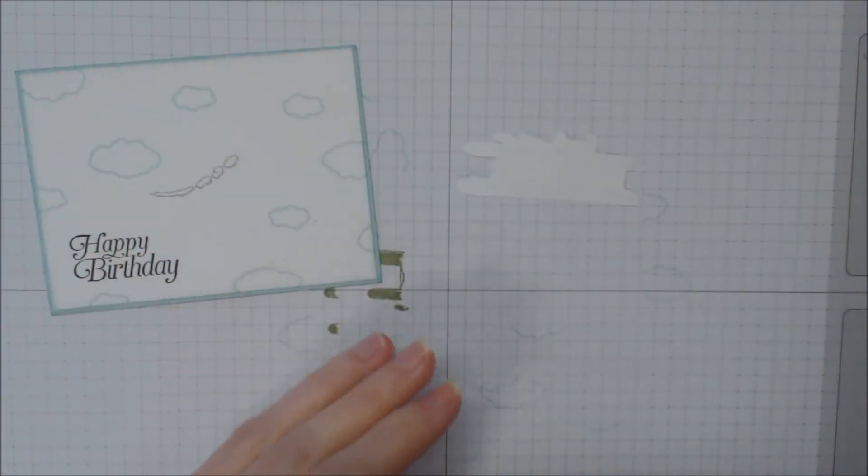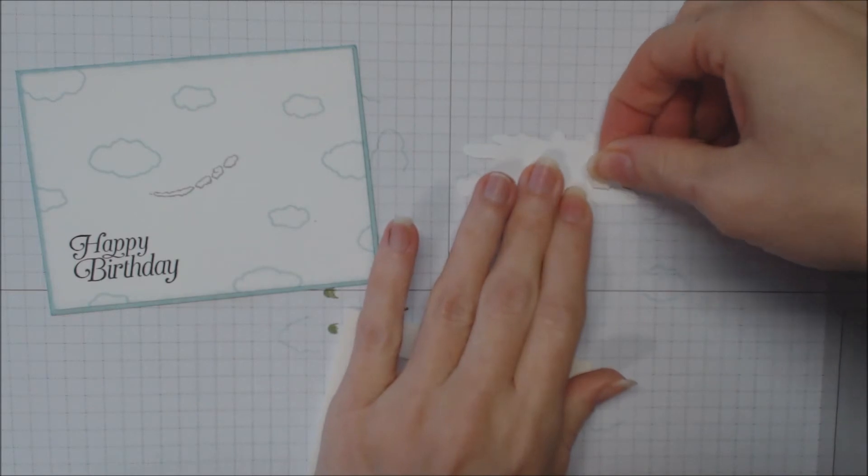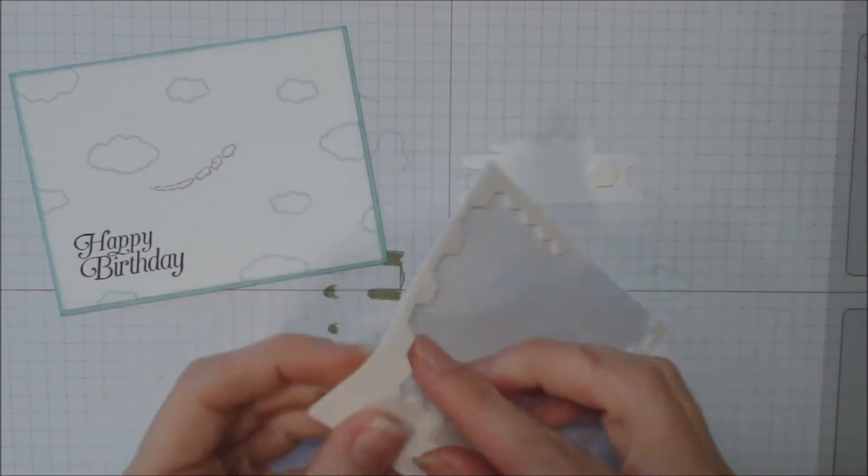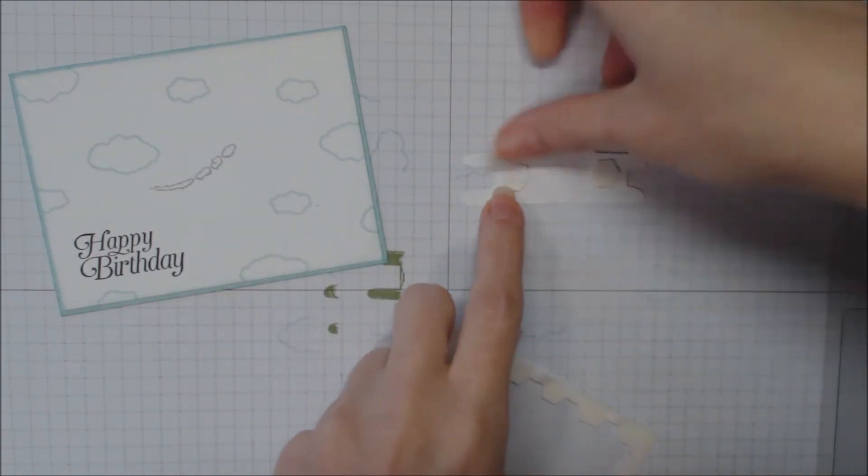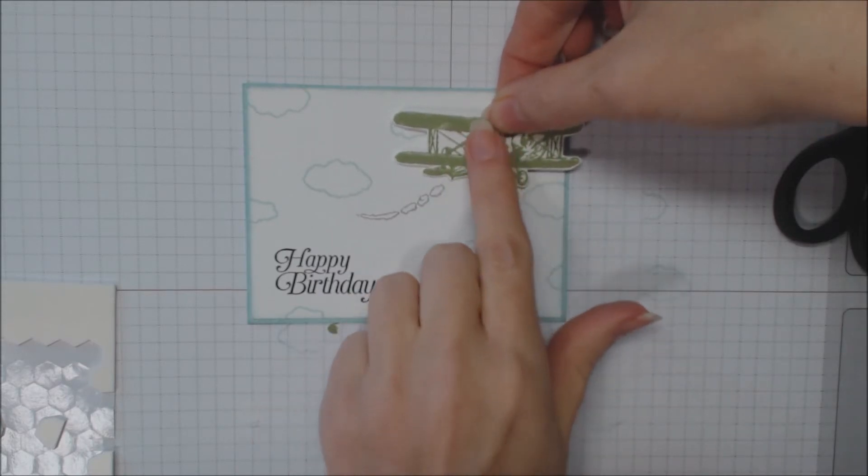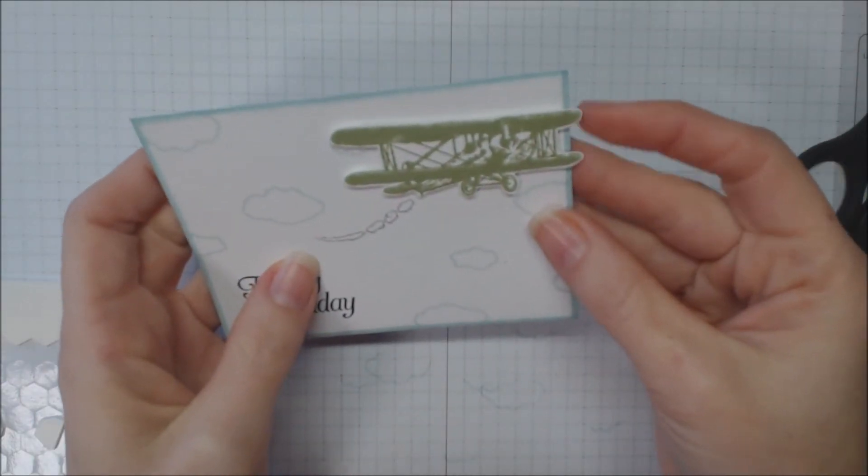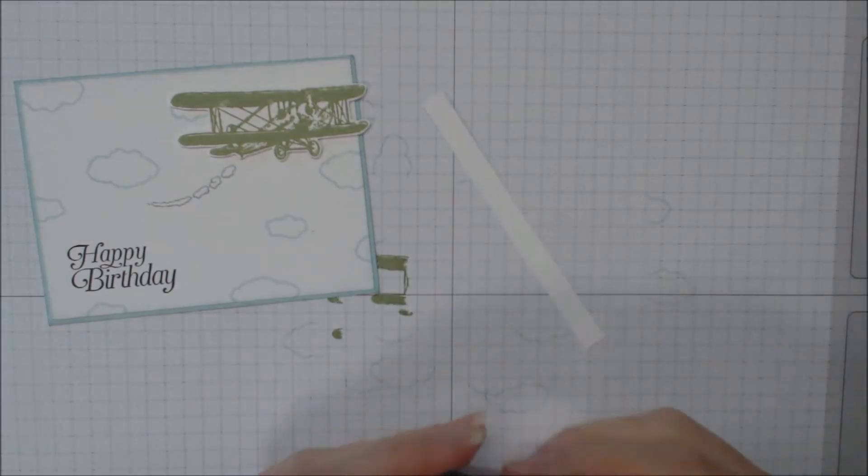And then we'll take some Stampin' Dimensionals. And we're going to give our little airplane some lift. I'm going to place it so that it looks like that little smoke trail is coming from the back of it. It's okay that it goes off the edge of that a little bit.